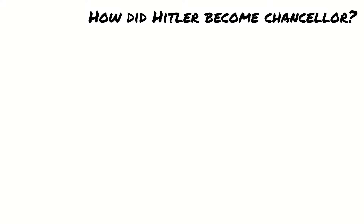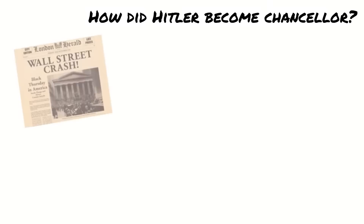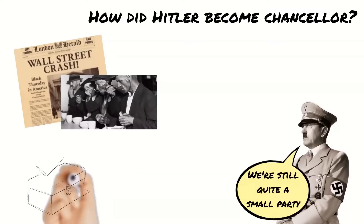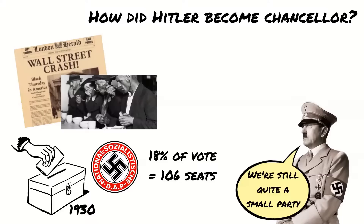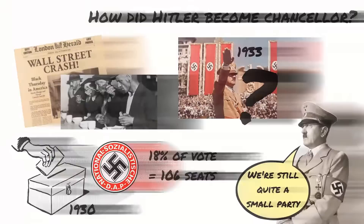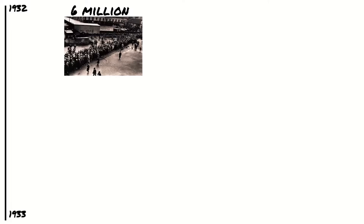Last time we were looking at the groups who supported the Nazis following the Wall Street Crash and the subsequent Depression. However, the Nazis did not yet have power. In the 1930 election the Nazis gained only 18% of the vote, giving them 106 seats in the Reichstag. So the Nazis were nowhere near getting a majority, but less than three years later Hitler would become the Chancellor of Germany. Today we're going to look at how that happened.